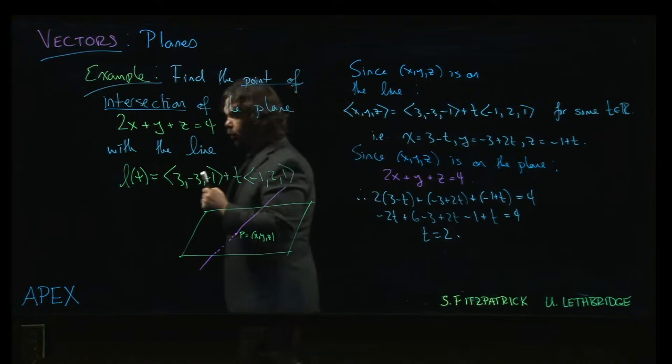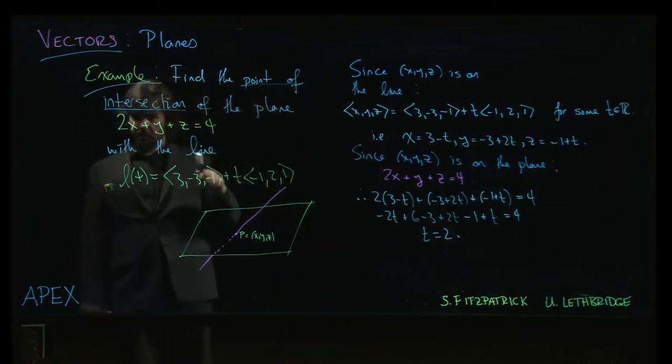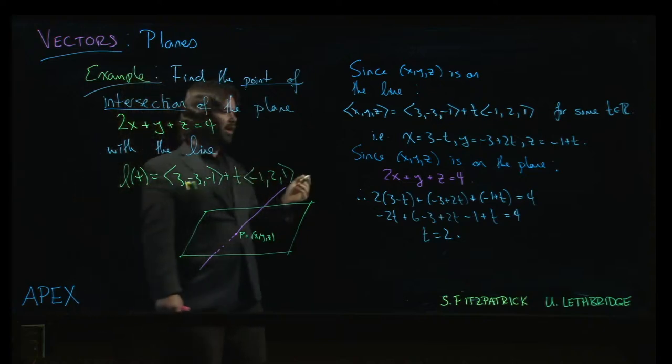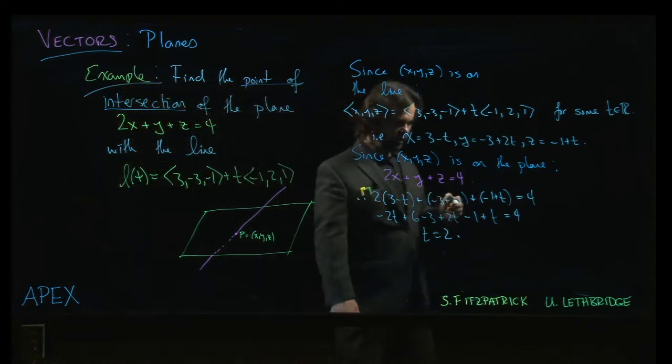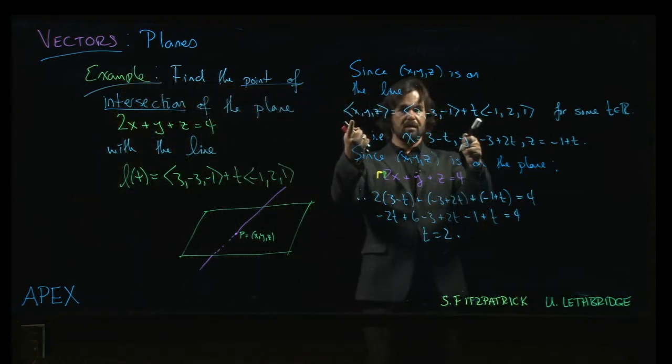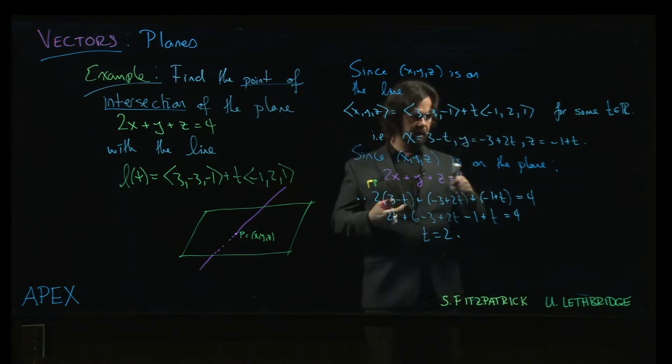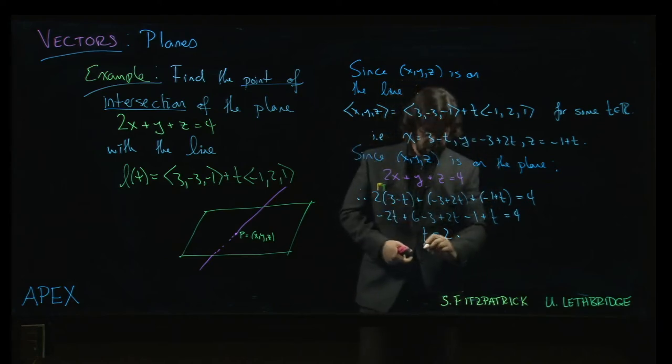Now, let's make sure that we've answered the question. The question says, find the point of intersection. Do we have a point? No. We just have a parameter value. How do we get the point from the parameter value? Well, we go back to the equation of the line. Or, if you like, the parametric equations.